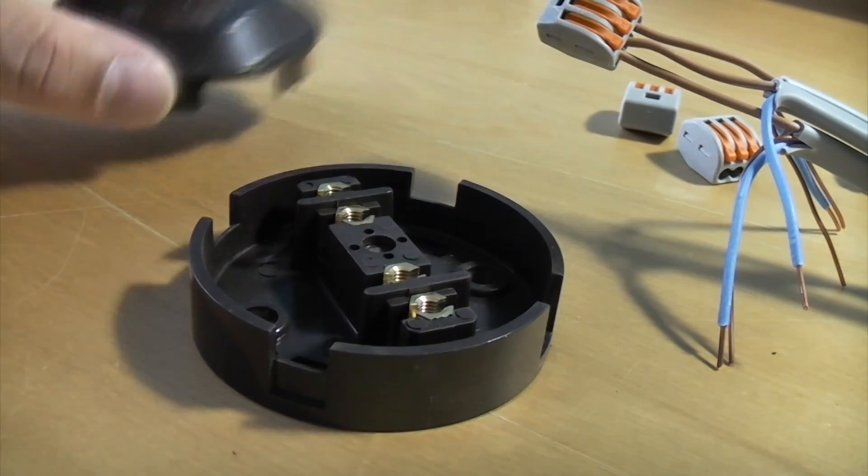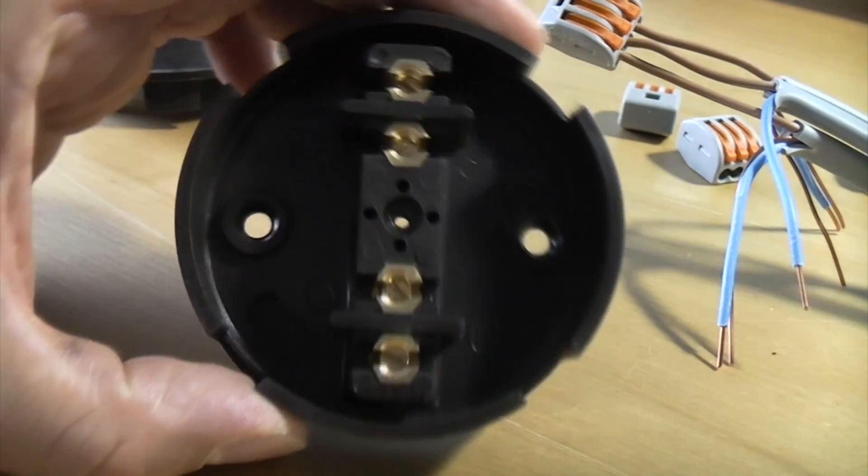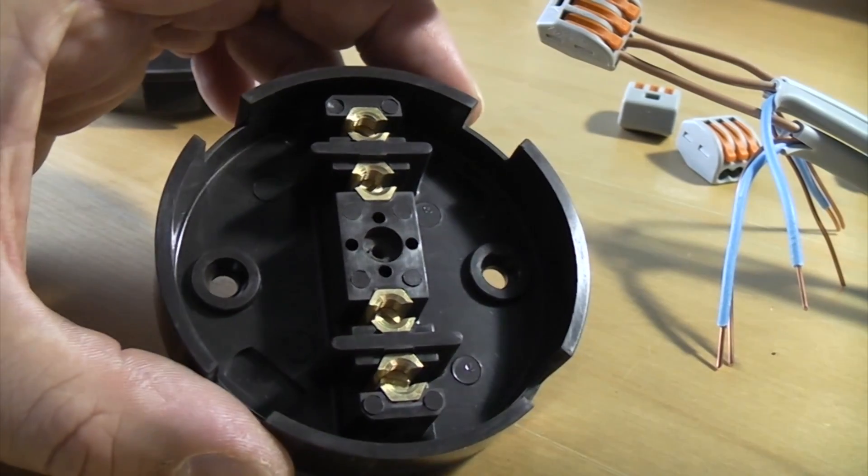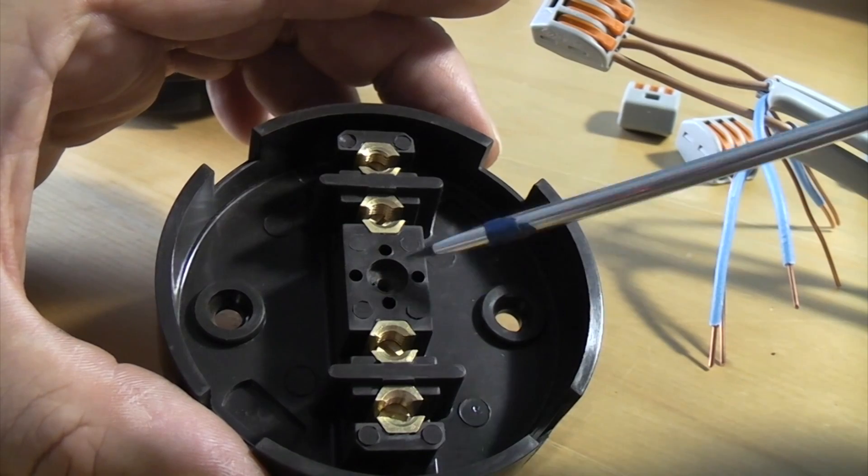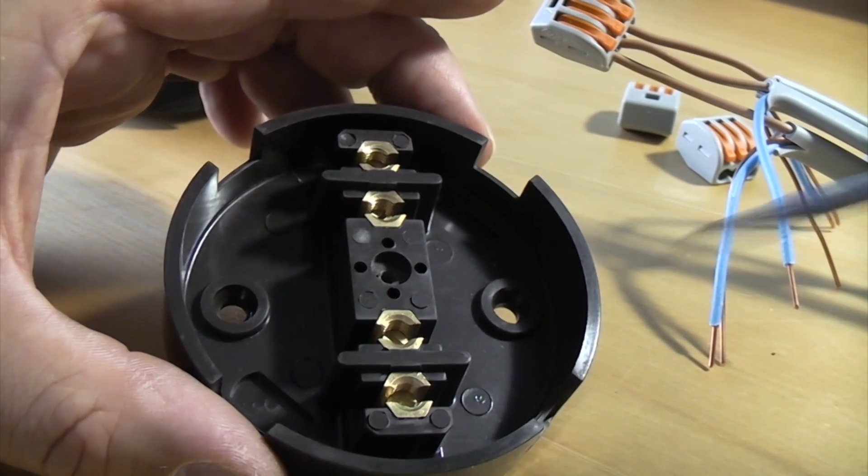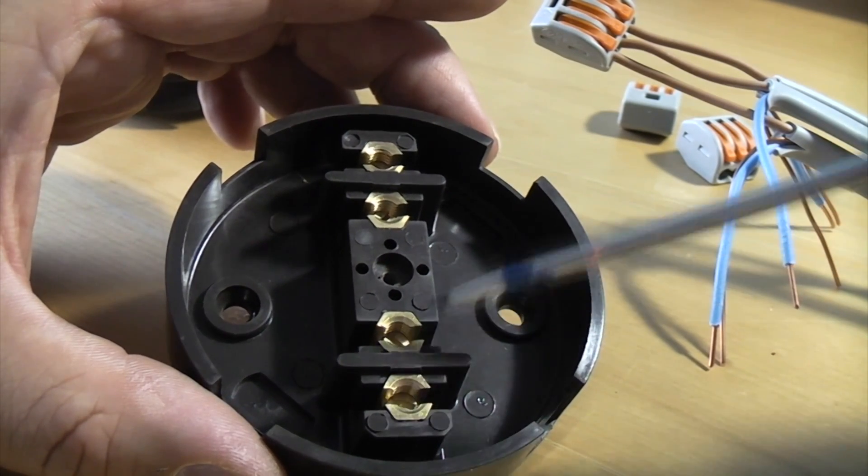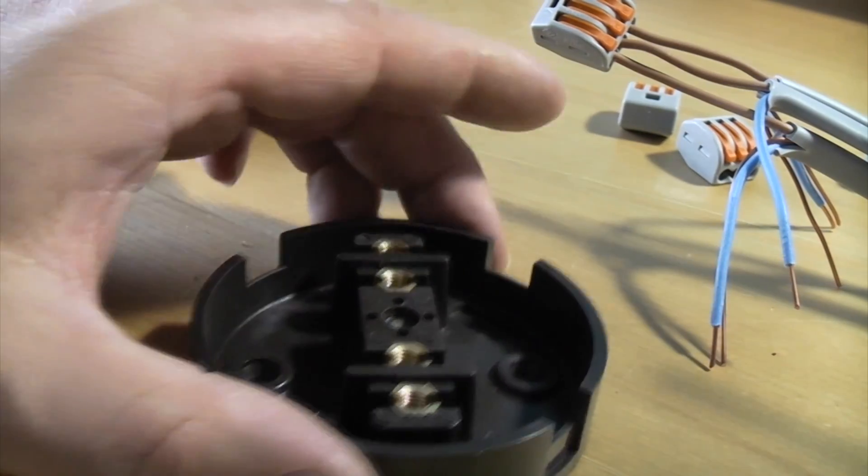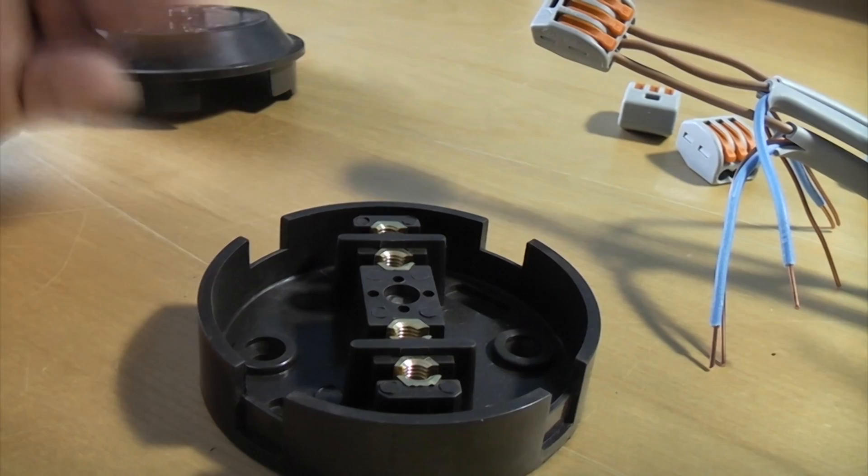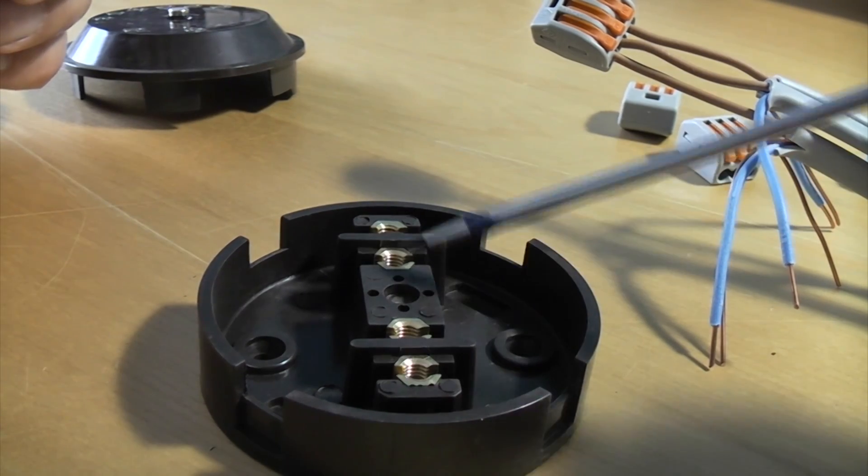In years gone by, you'd often find junction boxes like this being used, which aren't very good. They did the trick, but the problem is because the terminals are brass, it was easy to strip the terminals if you over-tighten them. Theoretically, they still need maintaining, so they have to be left in an accessible place where you can check that the terminals are tight.